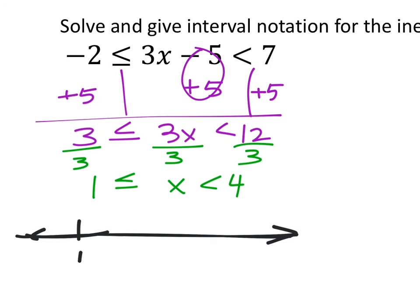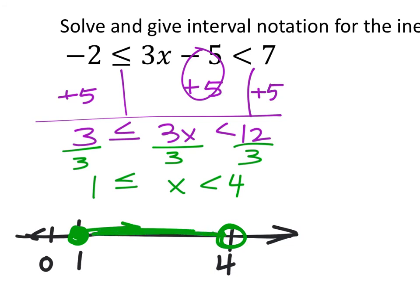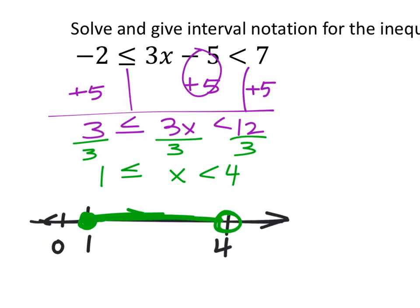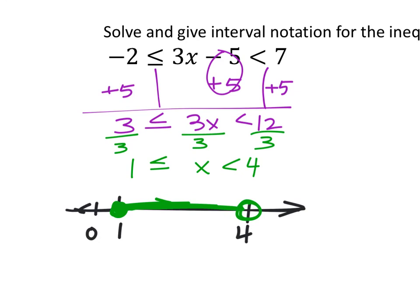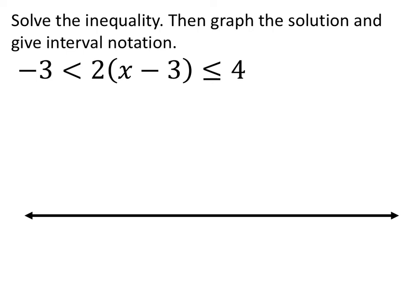For the graph: one is to the right of zero, four is further right. At one, a closed circle since x equals one, eating the x — goes right. At four, open circle since x can't equal four, not eating the x — goes left. It's everything in between. The interval notation: starts at one, included — square bracket; stops at four, not included — parenthesis. So [1, 4).